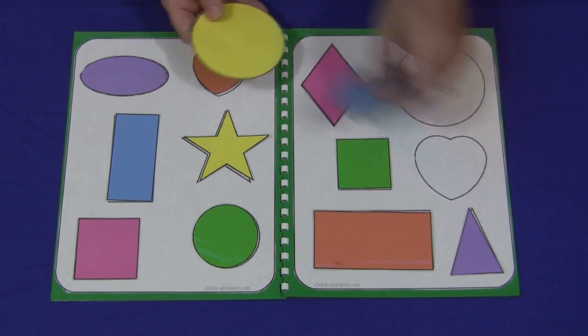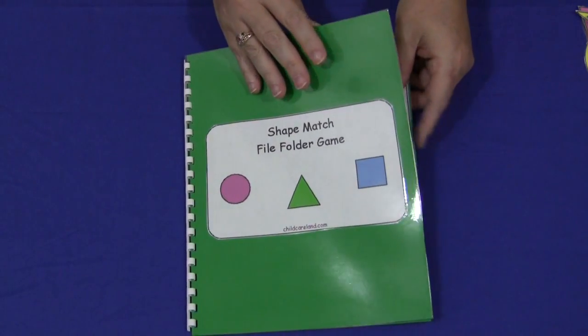Now you notice this isn't a traditional file folder and the reason for that is sometimes I can't get to an office supply store to have my file folders laminated. And I love to have those laminated because they last longer. So when that happens I usually just take two pieces of colored cardstock paper, put my title page on the front.